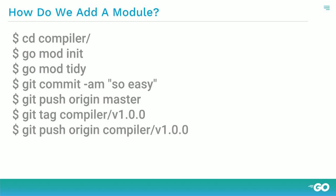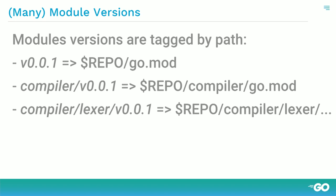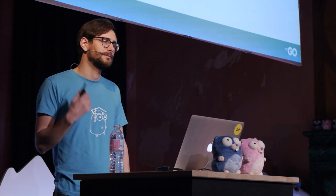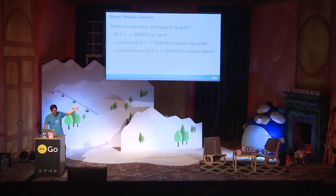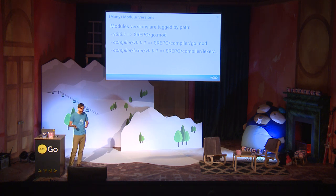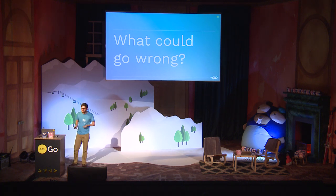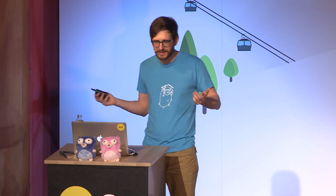We already forgot something — we need to specify a version. How do you do versioning for something that's not at the root? The root module gets just the version tag, which is what 90% of projects look like. If you have a module below the root, you append the path from the root to the version tag. So compiler is tagged as compiler/v1.0.0, and lexer, which is two levels down, is tagged as compiler/lexer/v1.3.7. GoMod understands this and looks for the specific tag with the specific path.